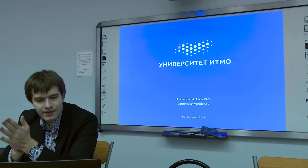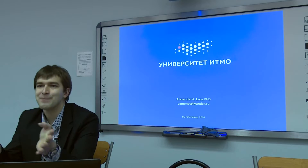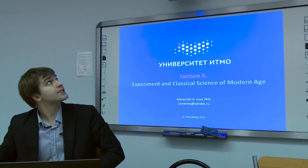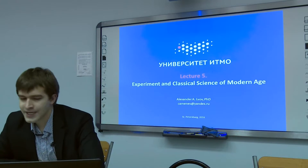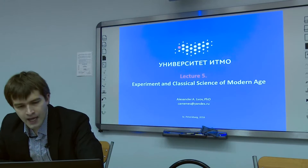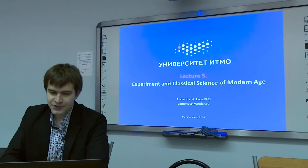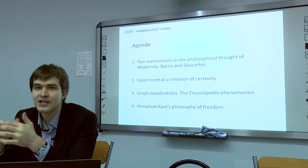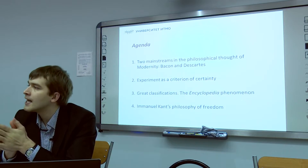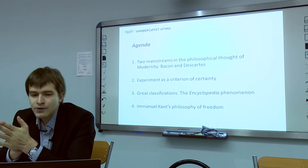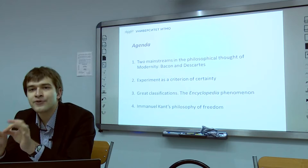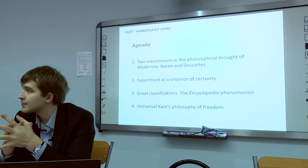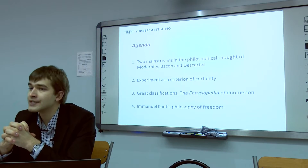Ladies and gentlemen, let's start. We are going to deliver the fifth lecture of the course, and the topic is experiment in classical science of modern age. Here we have some principal questions concerning four aspects of the very beginning and development of modern age philosophy and the science of modern age. We are going to coin the principal theoretical propositions concerning two mainstreams delivered during the 17th century.